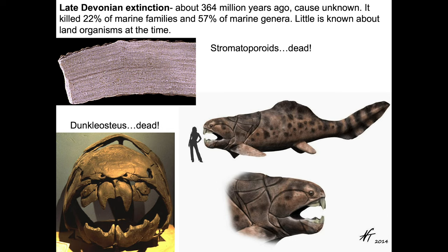The late Devonian came with another extinction about 364 million years ago. We don't know what caused it, but it was very significant — it killed 22% of marine families and about 60% of marine genera. We just don't know much about what was going on on land at the time. Two major organisms that went extinct include the stromatoporoids — layered cellular structures that were very common around the world. And perhaps a more famous example, Dunkleosteus, the boneheaded fish — a very, very large boneheaded fish — went extinct.